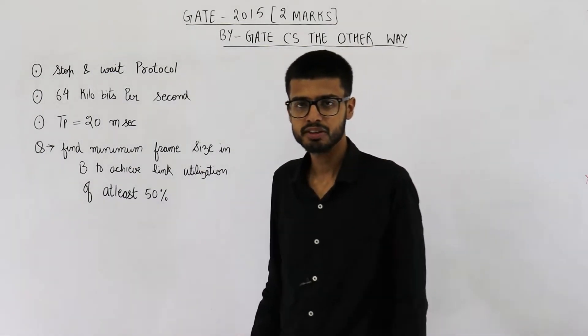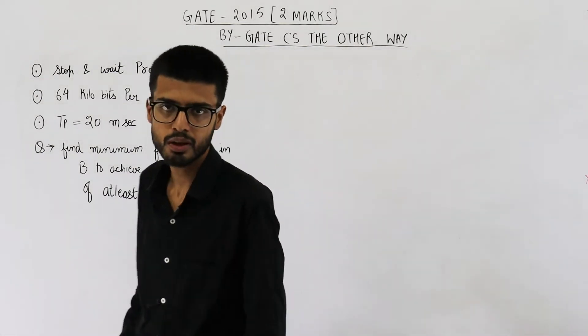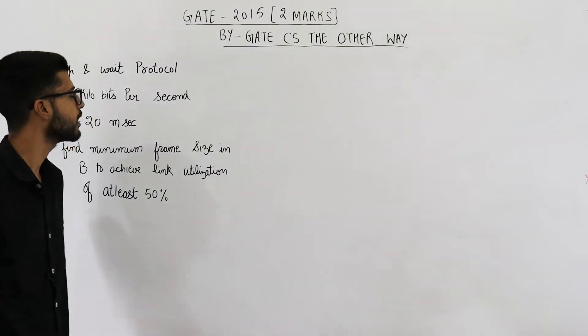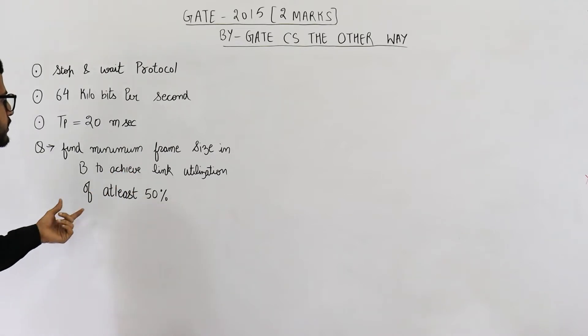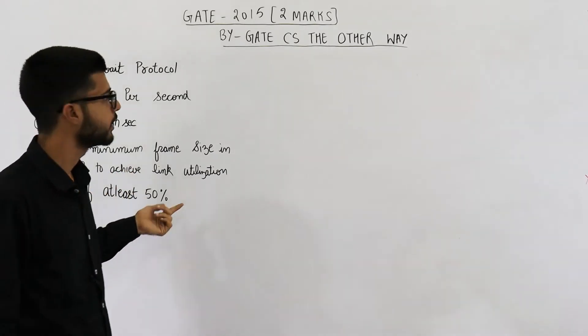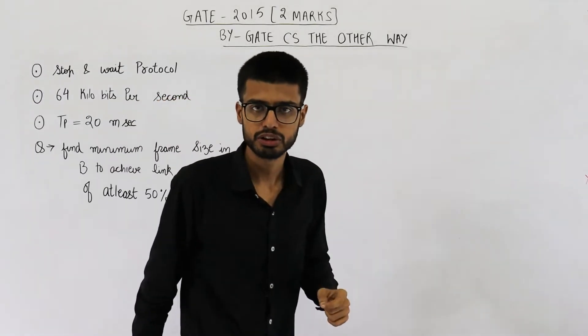Hello people, welcome back. This question is from gate exam of 2015. It's for two marks. They are saying find the minimum frame size in bytes to achieve link utilization of at least 50% and this data is given in the question.